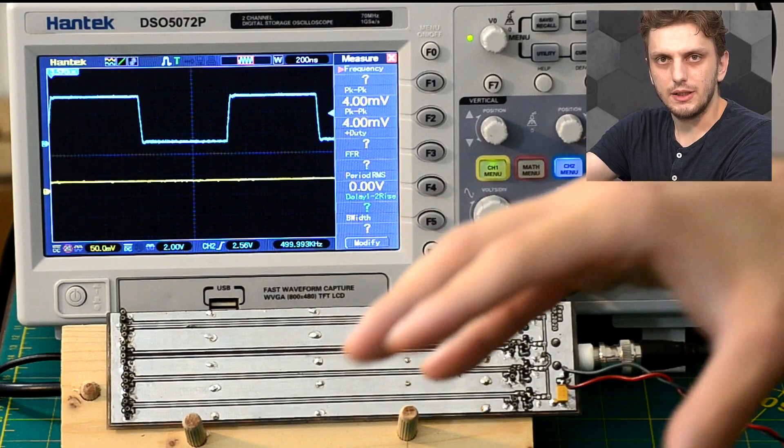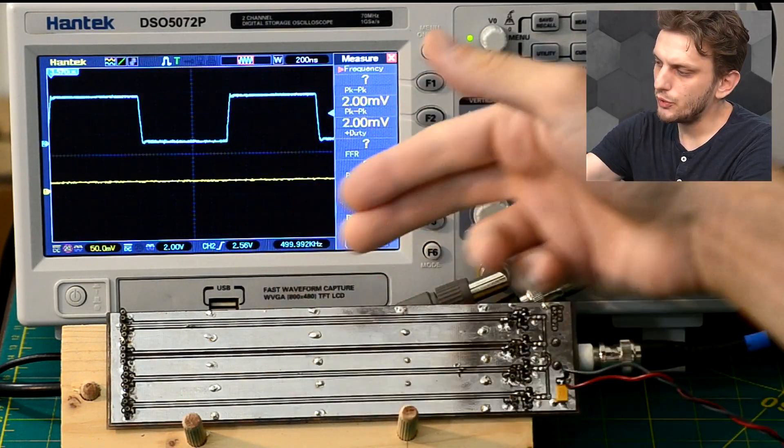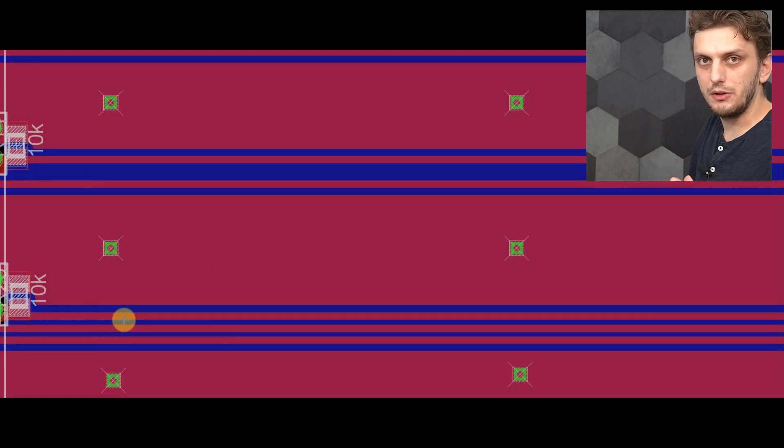So the final thing that I want to show you is what happens if you fill in the gap. Or in other words, what happens if this gap is filled in with a guard trace. And by guard trace I mean an extra trace which goes in parallel with the two lines and which is connected to ground at both ends.